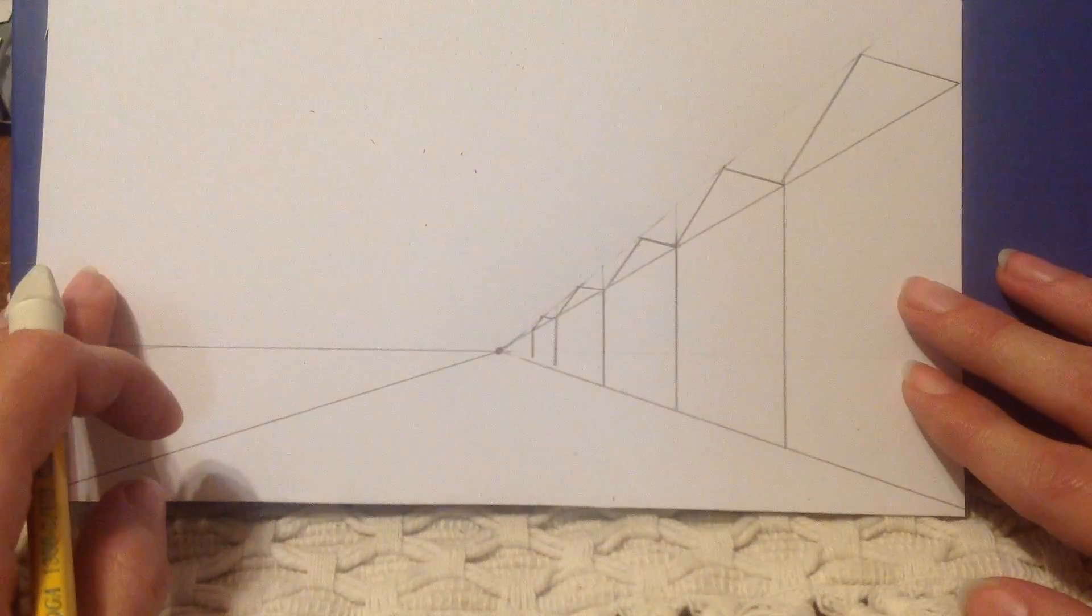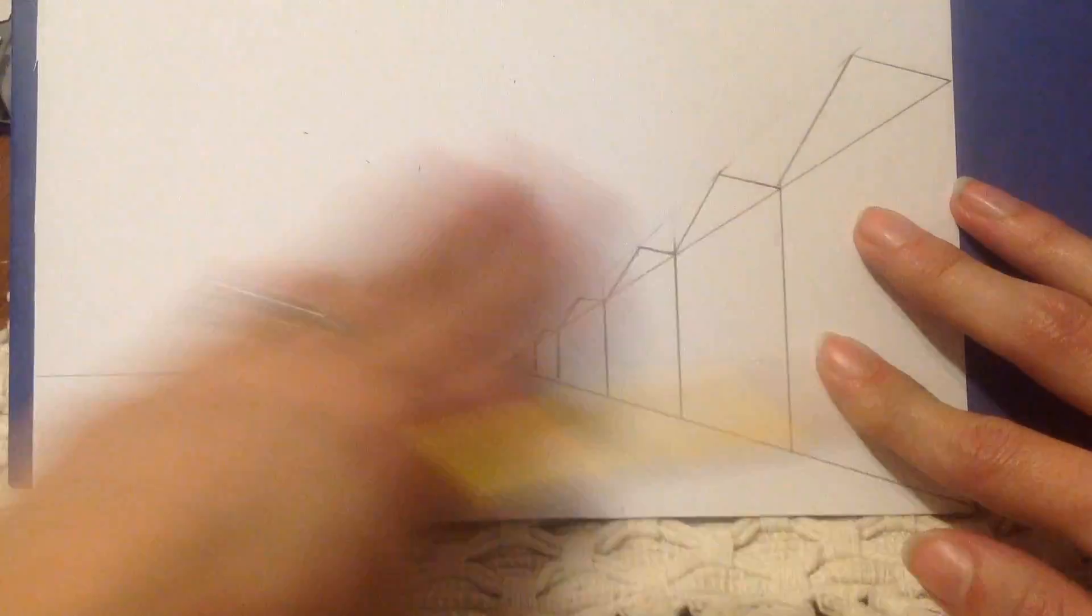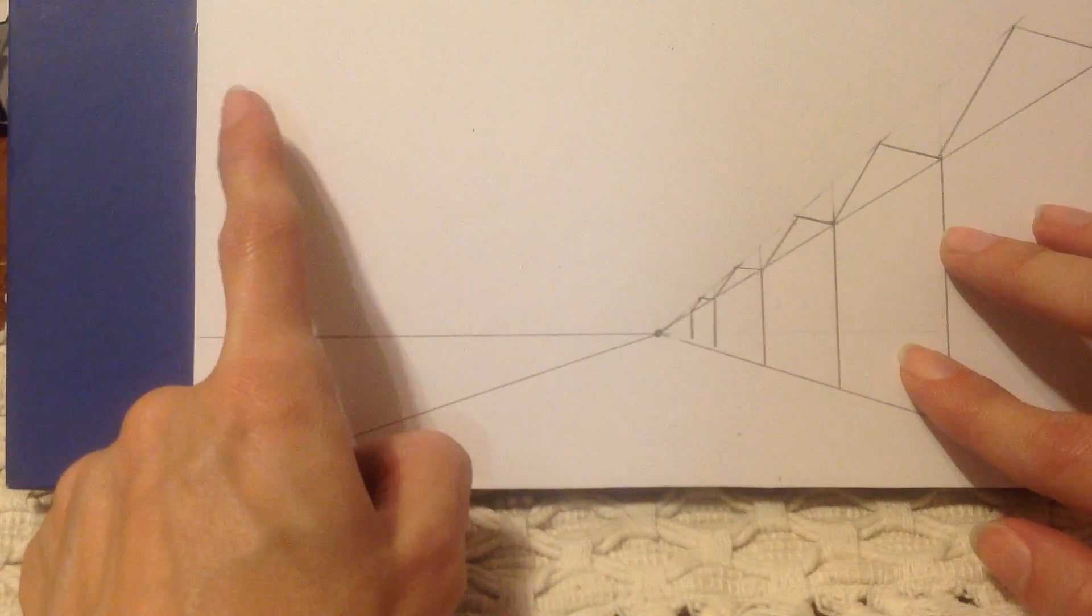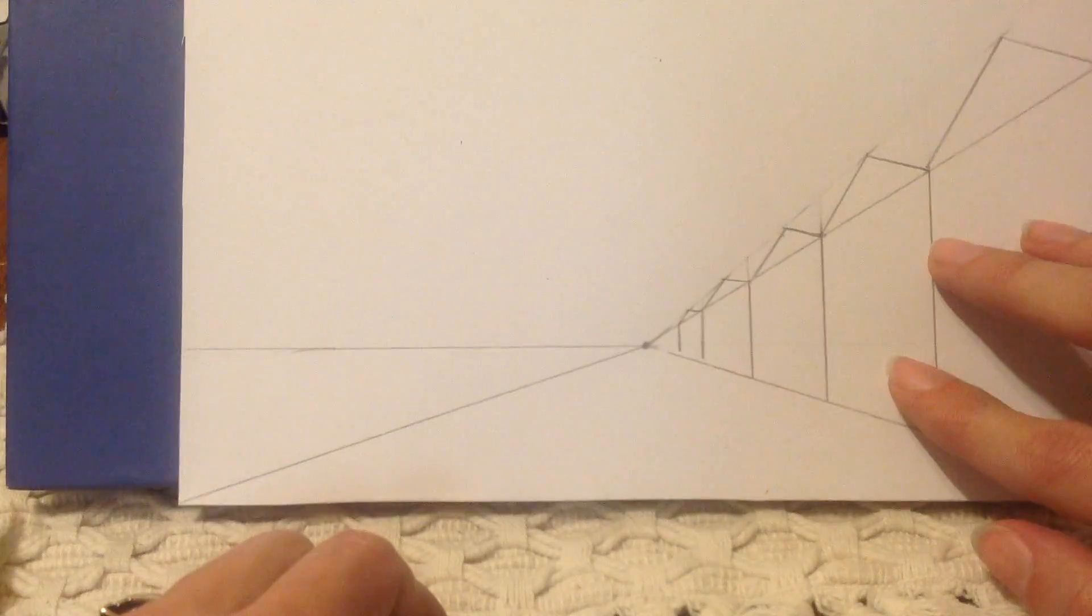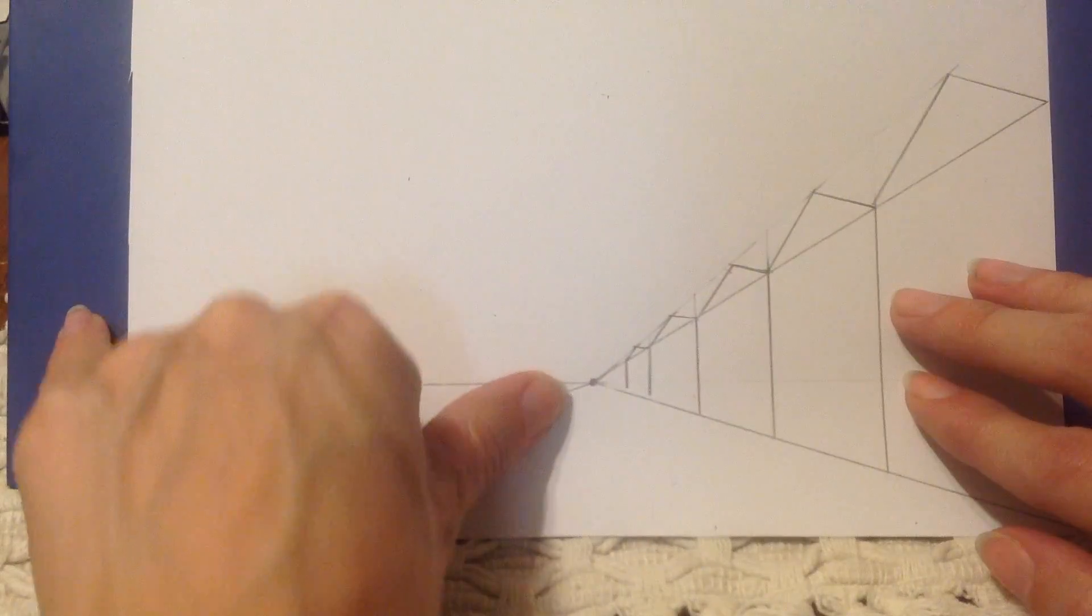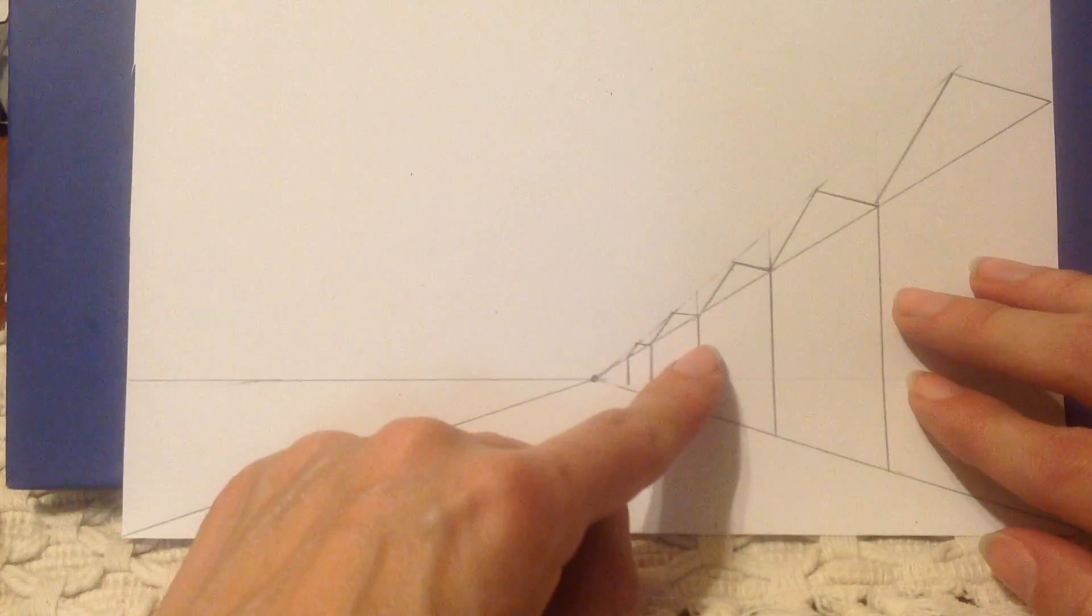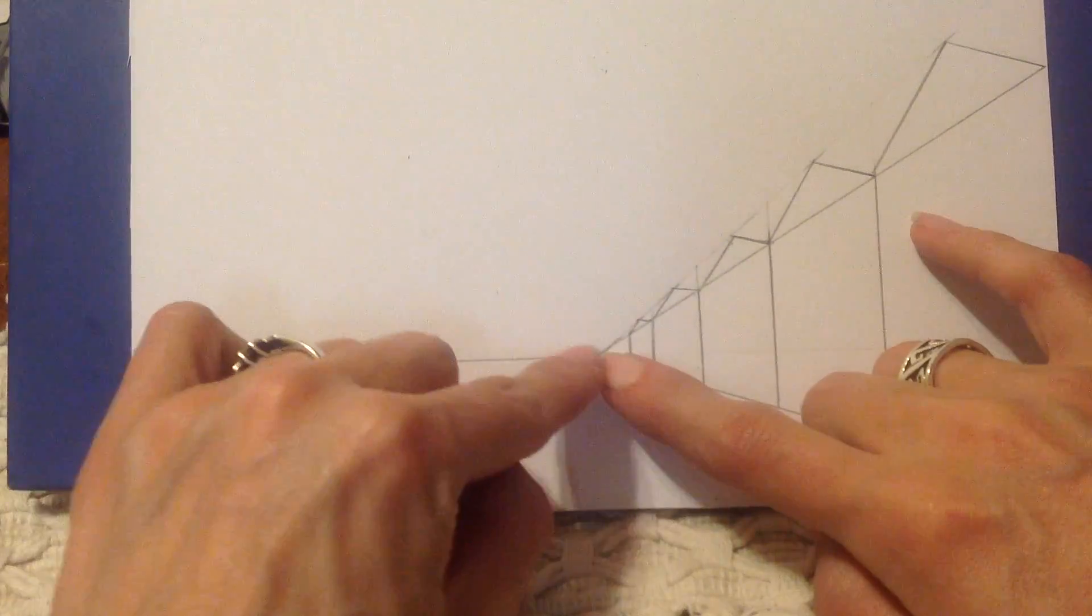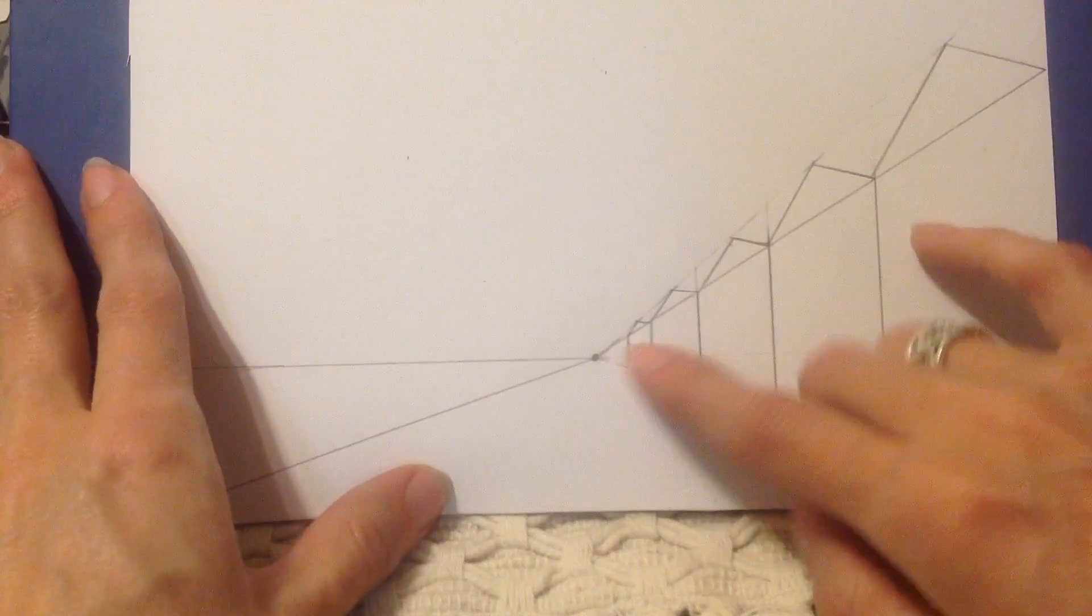And the next part is going to be to add some trees on this side. So I'm going over here and trees get smaller and smaller as they go back in space as well. So I need a line that shows where the top part of the trees is going to be. You could have short bushes and they would be lower or you could have tall trees that would be taller than the houses. I'm going to make my trees taller than the houses, which means that when I'm going to my vanishing point and I'm going away from my vanishing point, I'm going to make it go higher than the line I made on the right side.